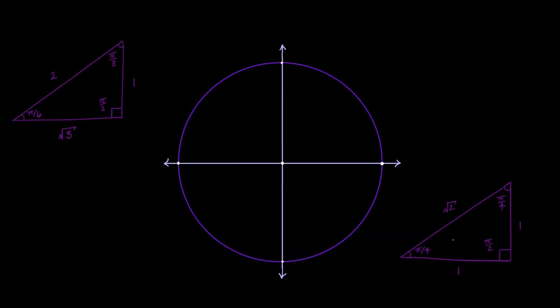The only things that you need to know in order to produce the unit circle off the top of your head are your two special triangles and the fact that a full circle is 2 pi radians.